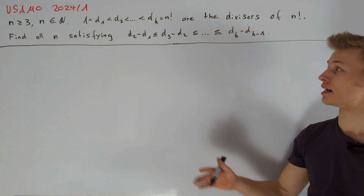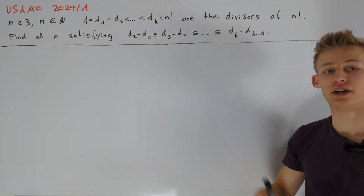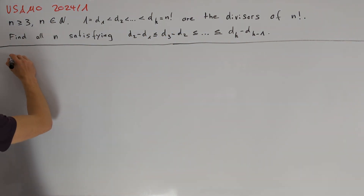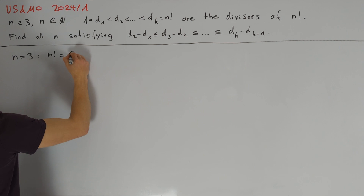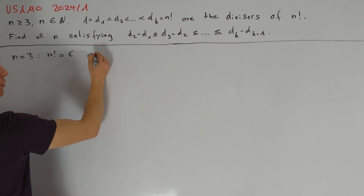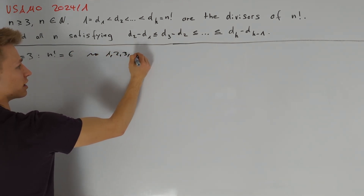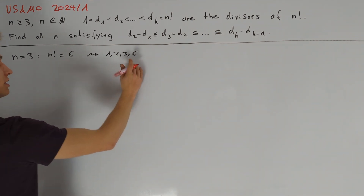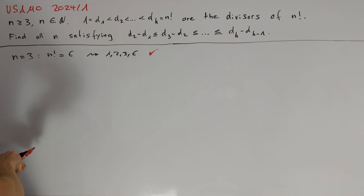To get a better feeling about these divisors, I want to write them down for small values of n. Let's start with n equals 3. Here n factorial equals 6 and therefore the divisors are 1, 2, 3, and 6. The differences are always increasing and therefore this is a solution.